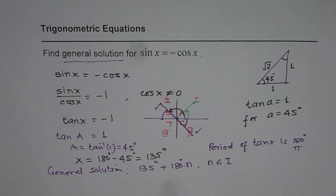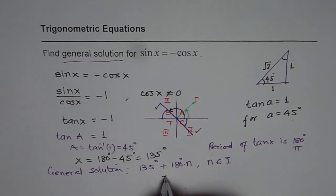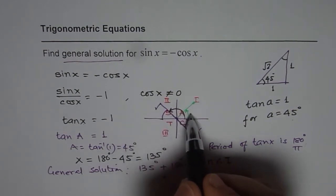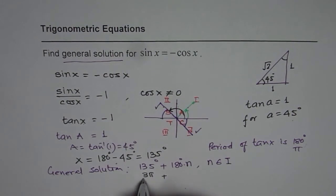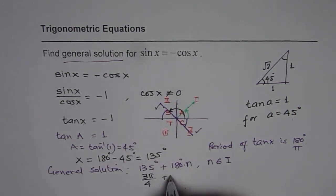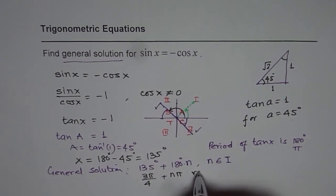Well those of you who are doing in radians, for them, this is π by 4, 2π by 4, 3π by 4. We have 3π by 4 plus 180 degrees is π, so we will say nπ. So that becomes the general solution in radians.